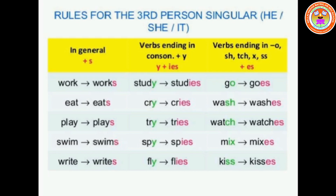In simple present tense, Rule 1: simply add -s to the verb. For example: work → works, eat → eats, play → plays, swim → swims, write → writes. Rule 2: If the verb ends in a consonant plus -y, then change -y into -ies. For example: study → studies, cry → cries, try → tries, spy → spies, fly → flies.